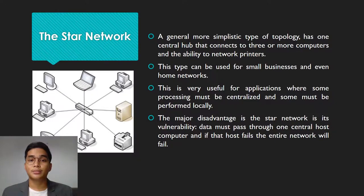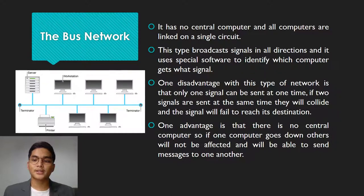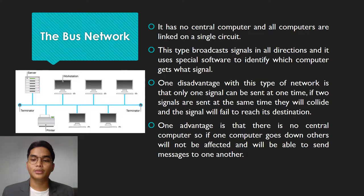The next topology is the bus network. It has no central computer and all computers are linked on a single circuit. This type broadcasts signals in all directions and uses special software to identify which computer receives a signal. One disadvantage is that only one signal can be sent at a time — if two signals are sent simultaneously, they will collide and fail to reach their destination. One advantage is that there is no central computer, so if one computer goes down, others will not be affected and can still send messages to one another.